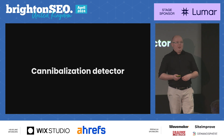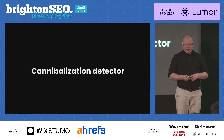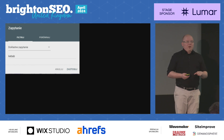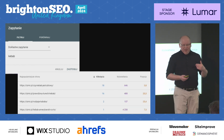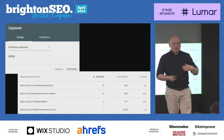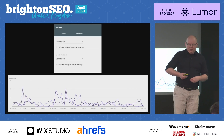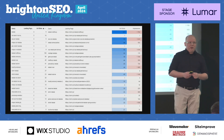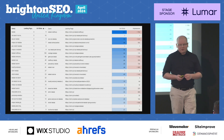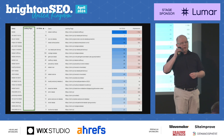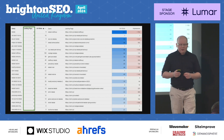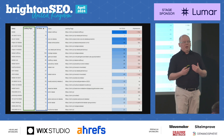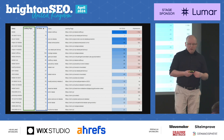The last one is a cannibalization detector. Search Console is a very good way to spot problems with cannibalization, but doing it manually keyword by keyword is also very time-consuming. We can do it in Looker Studio. The dashboard has two tables: the first one contains a list of keywords and a count of URLs appearing for each keyword, plus the total number of clicks, so you can easily spot which keywords have a cannibalization problem.